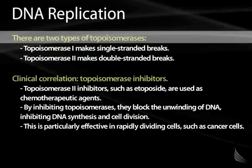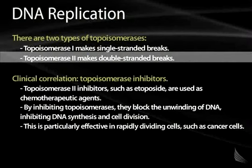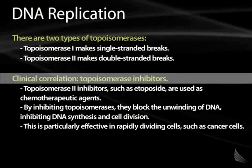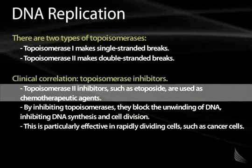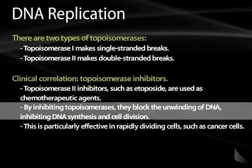There are two types of topoisomerases. Topoisomerase 1 makes single-stranded breaks, and topoisomerase 2 makes double-stranded breaks. There is an important clinical correlation here: if we want to kill dividing cells, such as cancer cells, we can inhibit topoisomerase 2 to prevent DNA replication. That's exactly what is done with certain chemotherapeutic drugs — topoisomerase 2 inhibitors such as etoposide. These drugs block the unwinding of the DNA, preventing DNA replication and synthesis, which effectively kills or prevents the growth and division of cancer cells.